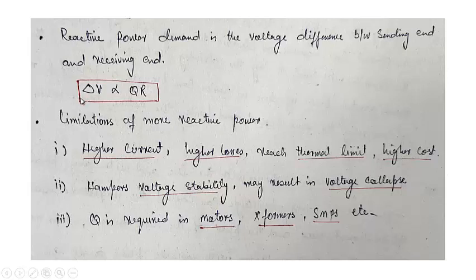From this equation, higher the reactive power, higher will be the voltage difference, or we can say the receiving voltage will decrease. It may result in voltage instability. When the voltage goes beyond a certain limit, it may result in voltage collapse as well. As load increases, the voltage will go on decreasing very fast, and in that case we do not have control over this voltage and it will reduce to a very low value where no load can be served.